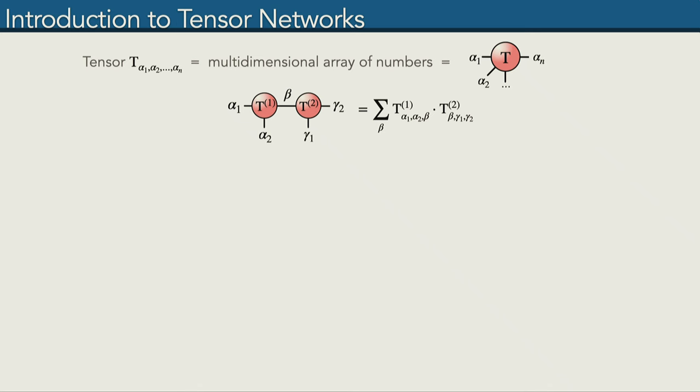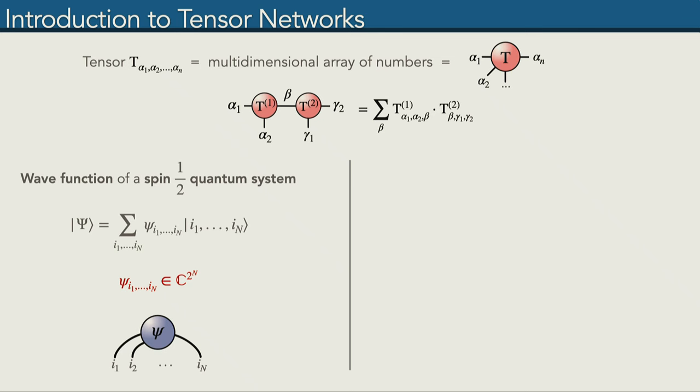For the sake of tensor networks, we can think about tensors as just being very high-dimensional arrays of numbers. We can use this graphical representation where we have the tensor as a blob and the open indices are open legs. In this graphical notation, tensor multiplication means we just connect two or more of these open legs. The wave function of a spin-1/2 system is nothing else than just a collection of complex numbers. Once we fix the basis, we just need one complex number to describe the amplitude for each basis vector.